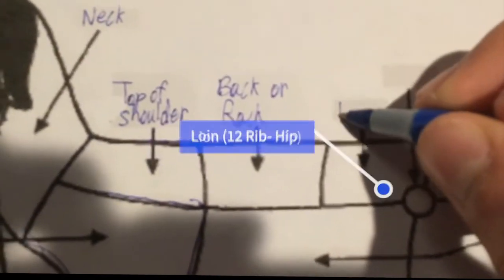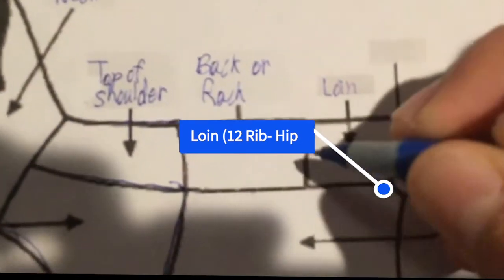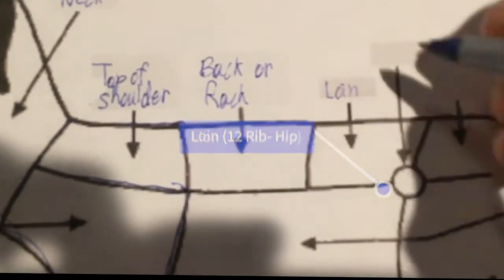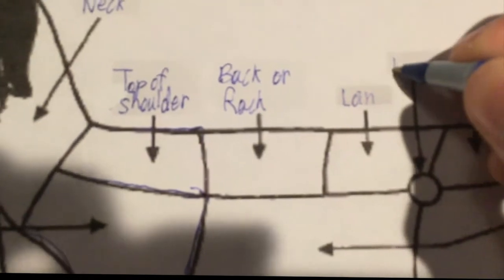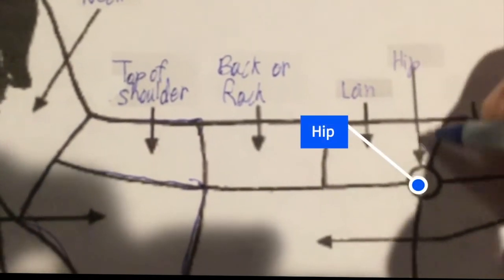And here's the loin, which is measured from the 12th rib to the hip. And the hip is right here.